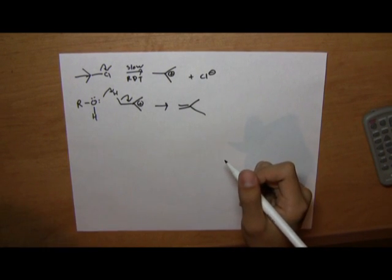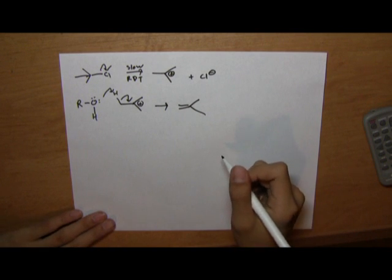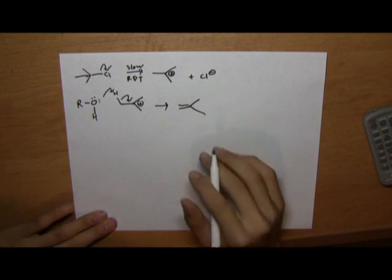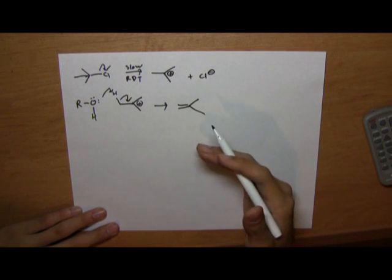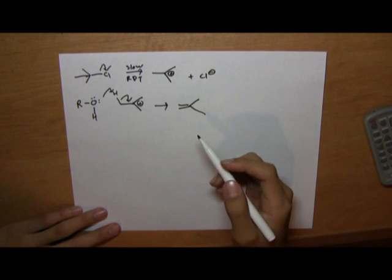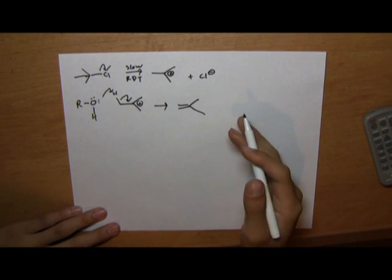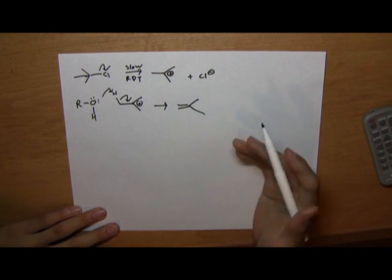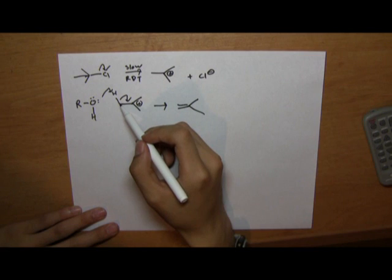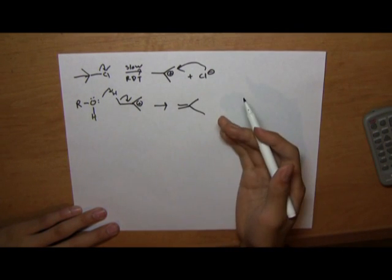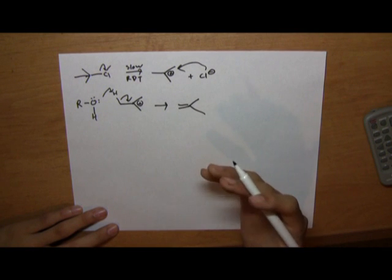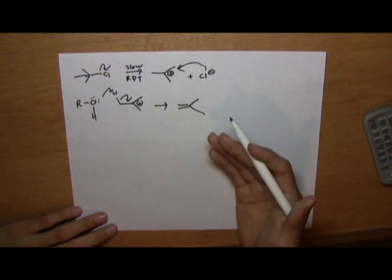Now, E1 reactions almost always accompany SN1 reactions, and the only way to discriminate between the two is with temperature. For E1 and elimination in general, they prefer higher temperatures due to the higher energy of removing a hydrogen here, instead of just blatantly attaching there for SN1. So in general, E1 has a smaller yield than SN1.